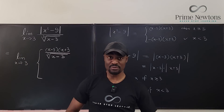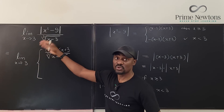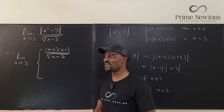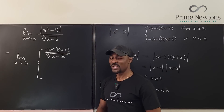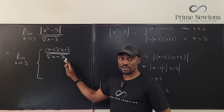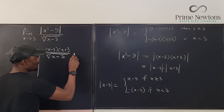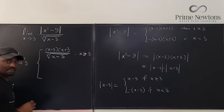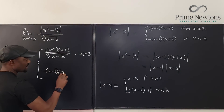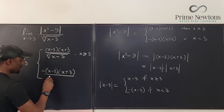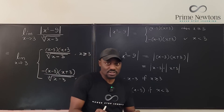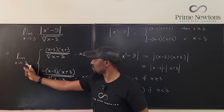When I started this, I should have plugged in 3 first — you would have seen that you can't plug in 3 because you get 0/0. That's why this was a tough problem. This would give 9-9 on top and 3-3 on the bottom, both zero. That's why we're doing the simplification. The second equation is -(x-3)(x+3) over the cube root of (x-3) when x < 3.